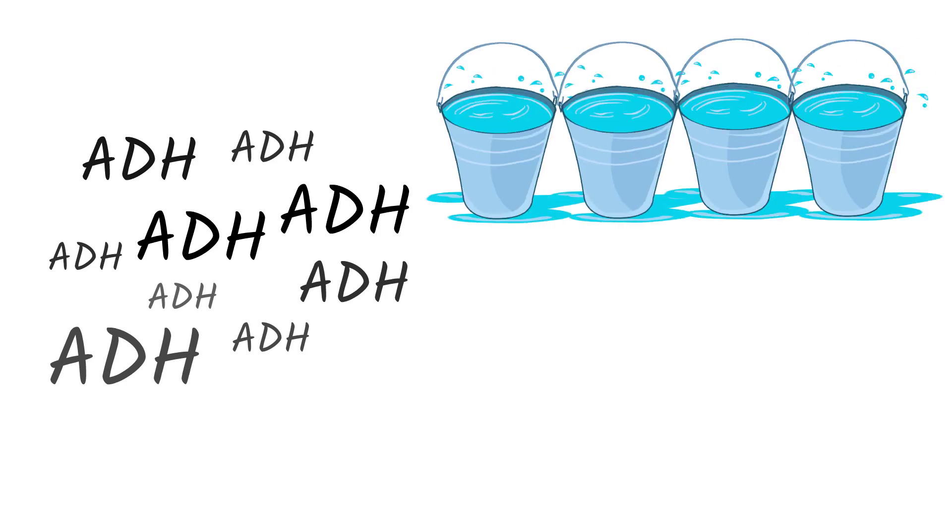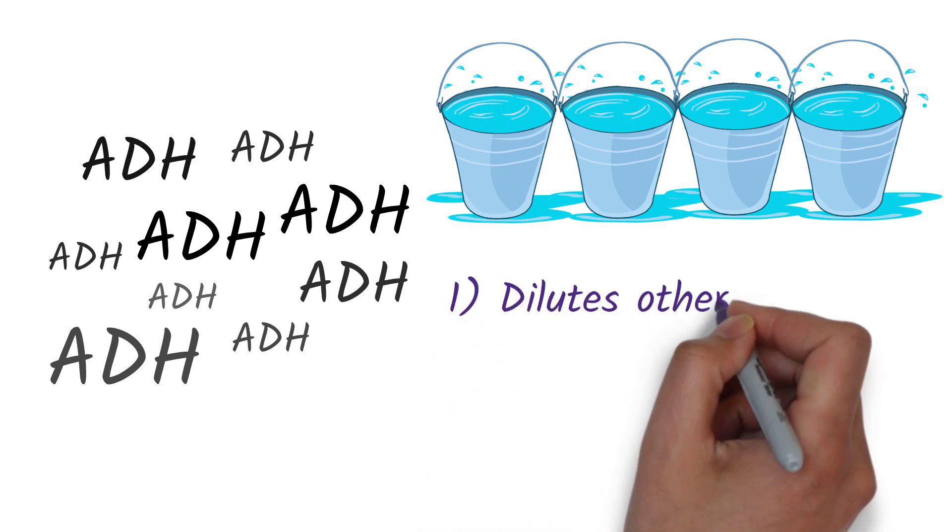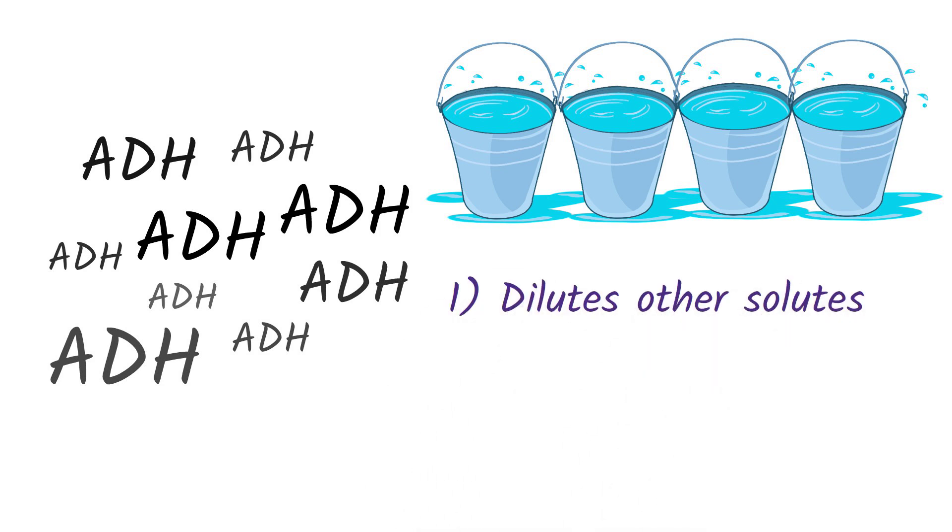SIADH is a condition in which your body makes too much ADH. This causes increased water retention in the body, which can lead to two things. Number one: it dilutes other solutes floating around in our body, like sodium.